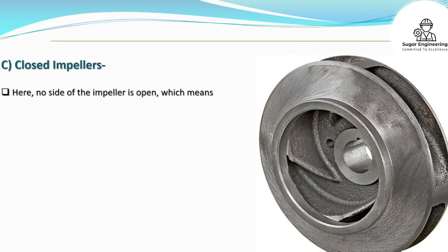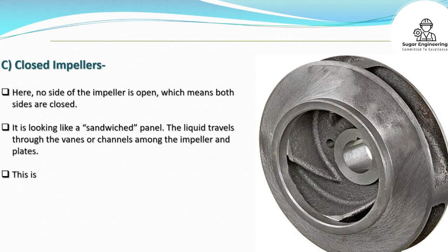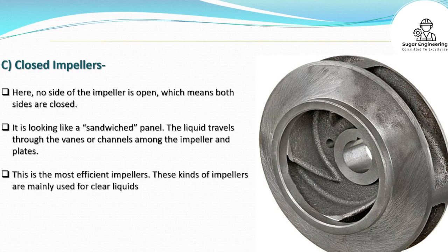C. Closed impellers: No side of the impeller is open — both sides are closed. It looks like a sandwiched panel. The liquid travels through the vanes or channels among the impeller and plates. This is the most efficient type of impeller and is mainly used for clear liquids.